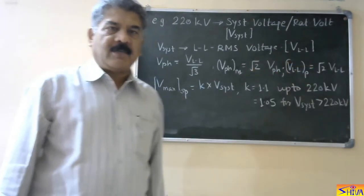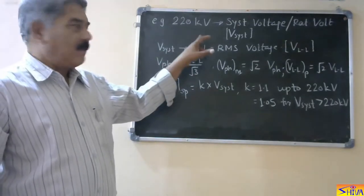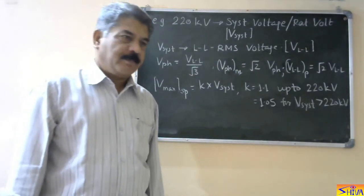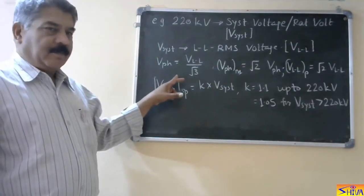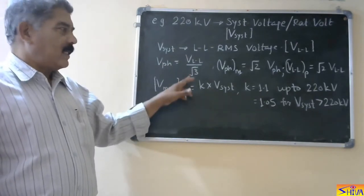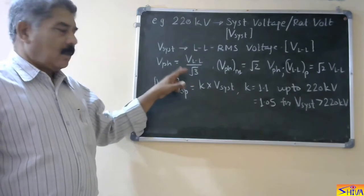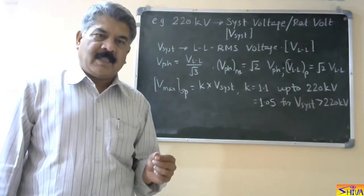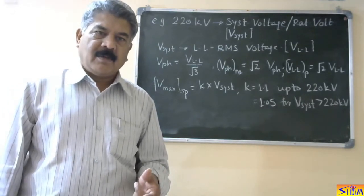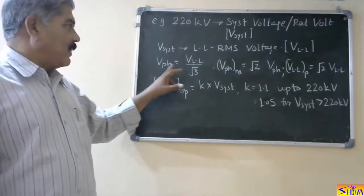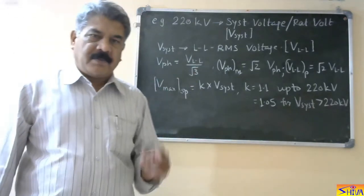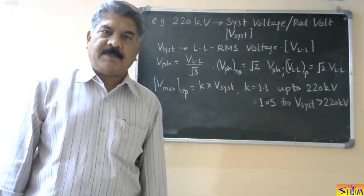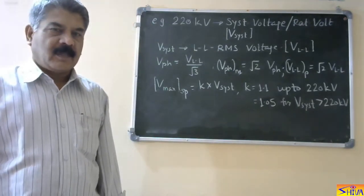Similarly, for a 400 kV system, that 400 kV is the system voltage — the rated voltage — and it is the line-to-line RMS value. The phase value is line voltage divided by root 3. In an AC system, line voltage is measured between two phases, such as AB, BC, or CA. Phase voltage is measured between a phase and ground — for example, phase A with respect to ground, phase B, or phase C with respect to ground.